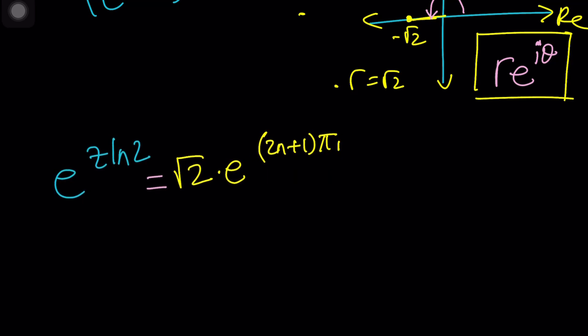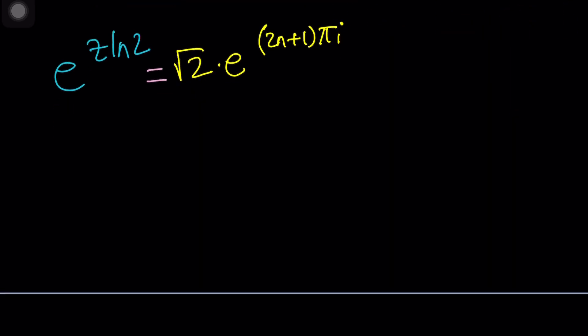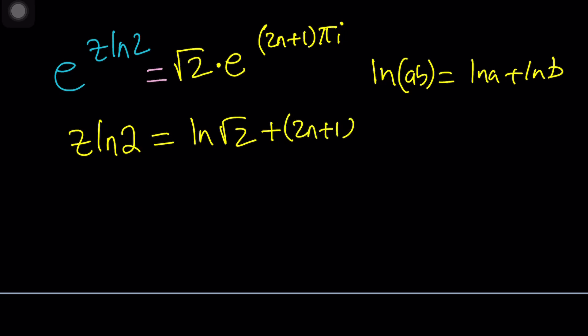We've got a nice equation. Now we're going to natural log both sides. That's going to give us z ln 2 equals, when you ln root 2 we'll simplify that next. And then this is going to be a product. When you ln a product, ln AB is ln A plus ln B. This is also true for complex numbers. ln root 2 is a real valued function, plus ln E is 1, so this can be written as 2n plus 1 times pi times i.